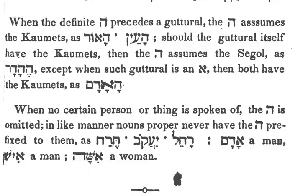He-Hayidiah: when the He-Hayidiah precedes a guttural, then something else happens. The He then assumes the vowel kamets, as in 'ha.' If the guttural itself has the kamets, then the He-Hayidiah assumes the vowel segol, as in 'hey hadhar' — except when such a guttural is an aleph, and then they both have the kamets.